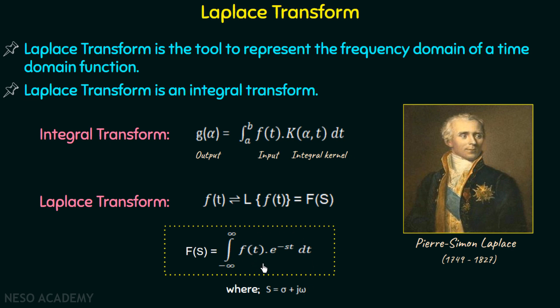Comparing this with the general integral transform expression, we can see that F(s) is the output, f(t) is the input, and e to the power minus st is the integral kernel — it is a function of both s and t. This is the Laplace transform expression used to convert a time domain function to a frequency domain function.